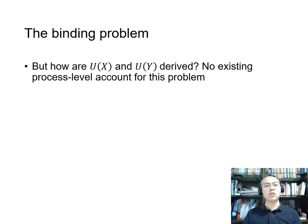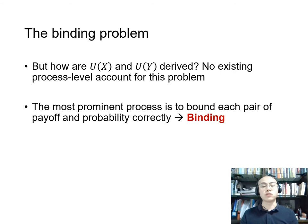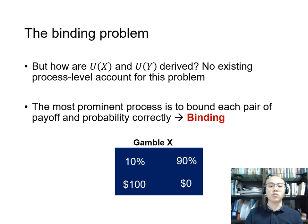But how are the utilities of these options derived? Neither economic theories nor the sequential sampling models I just mentioned provide a process-level account for this problem. To us, the most prominent process to achieve this is to associate each pair of payoffs and probabilities in each branch correctly — and that's what we call the binding problem. For gamble X, correct binding means associating 10% chance with $100 and 90% chance with $0. If a decision maker associates 90% chance with $100, then that's incorrect binding.